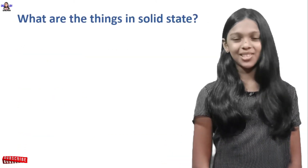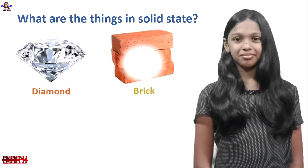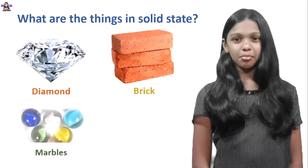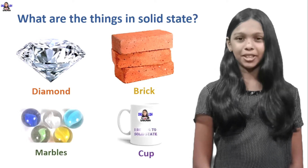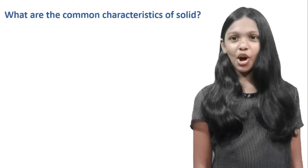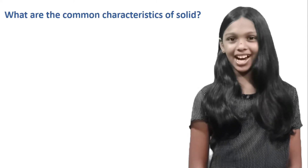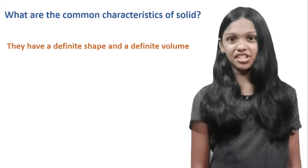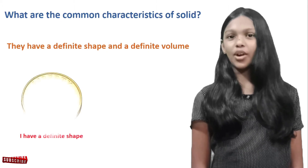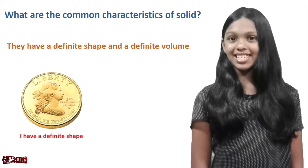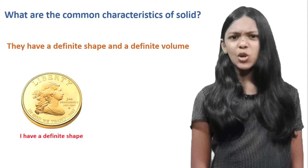Some examples of solids: diamond, brick, marbles, and cup. Do you know what the common characteristics of solids are? They have a definite shape and a definite volume. Look at this coin here — it has a definite shape.